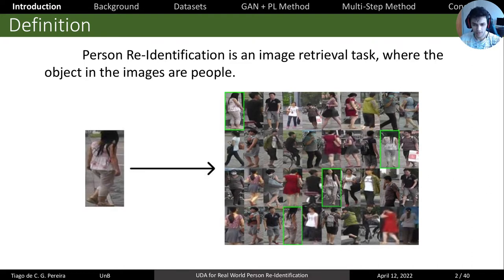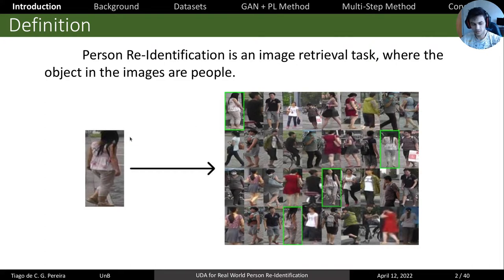You have a gallery of images of people, and given a new image of a person, you want to search for this subject in your gallery — you want to know where they were passing moments earlier, and find the matches in your gallery. Basically, Person Re-Identification is the algorithm that allows you to do this matching, and it can be used for many real-world applications.